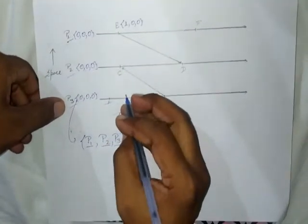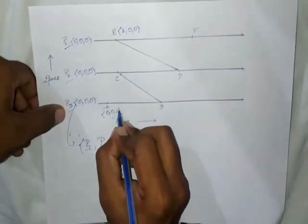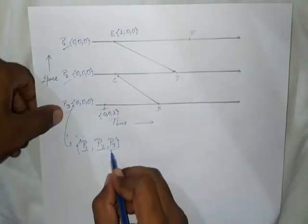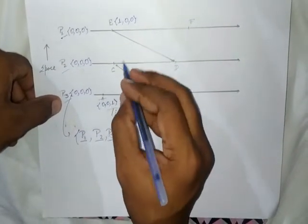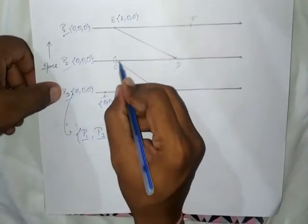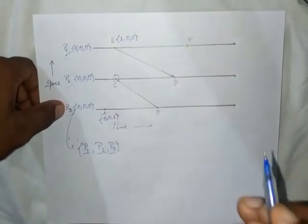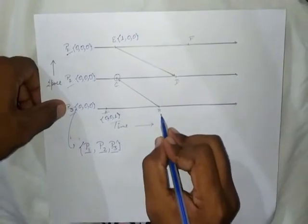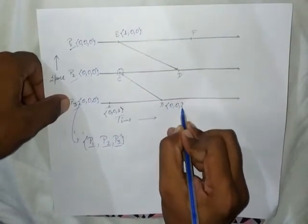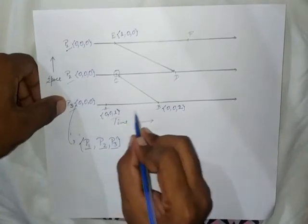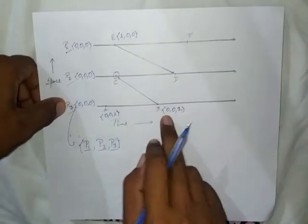Similarly, the vector for event A is [0, 0, 1], because the 1 is in the third position since A is an event of process P3, so the counter of P3 is increased. Similarly for event B: B is the second event for process P3, so after A we increase the counter by 1, giving B the vector [0, 0, 2].